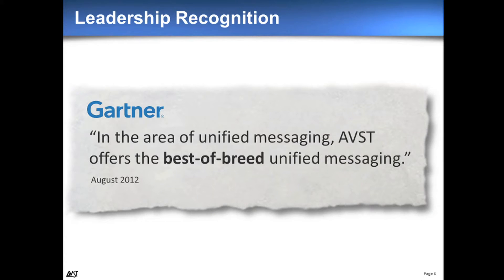Gartner talks about the UC quadrant — they're probably the company that tracks it and gets the most attention. To be in their quadrant, there's a rather large list of things you have to provide. We don't make it into that quadrant directly because we only focus in a very small area — we tend to be focused on a best-of-breed solution. If you read the Gartner quadrant, it talks about the suites where people offer everything in one package, noting you don't tend to get best-of-breed in every solution. They actually refer to us by name saying if you're interested in a best-of-breed unified messaging solution, you should go talk to AVST.